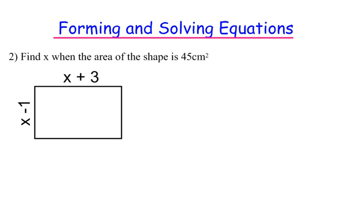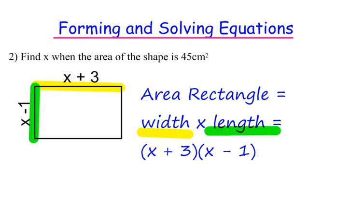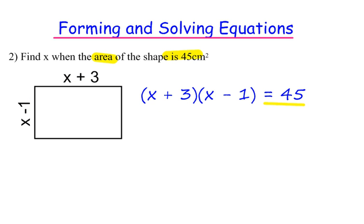Question 2: Find x when the area of the shape is 45cm squared. The area of the rectangle is the width times the length. For this example, the width is x plus 3, and the length is x minus 1. So we can form an expression here. This needs to be equal to 45.